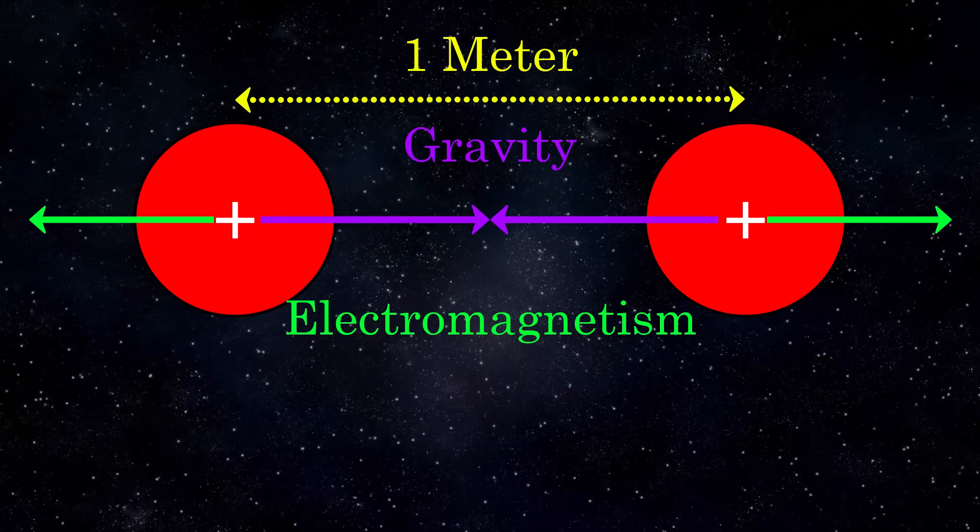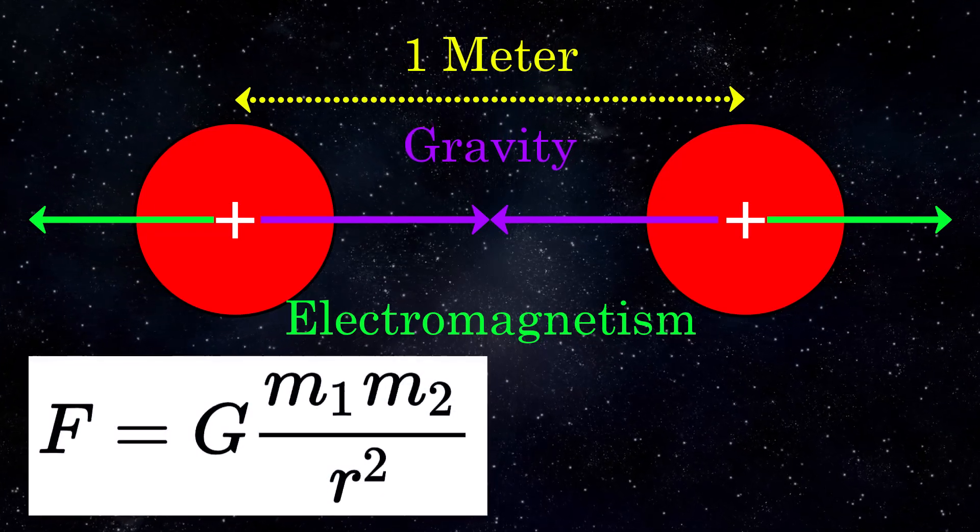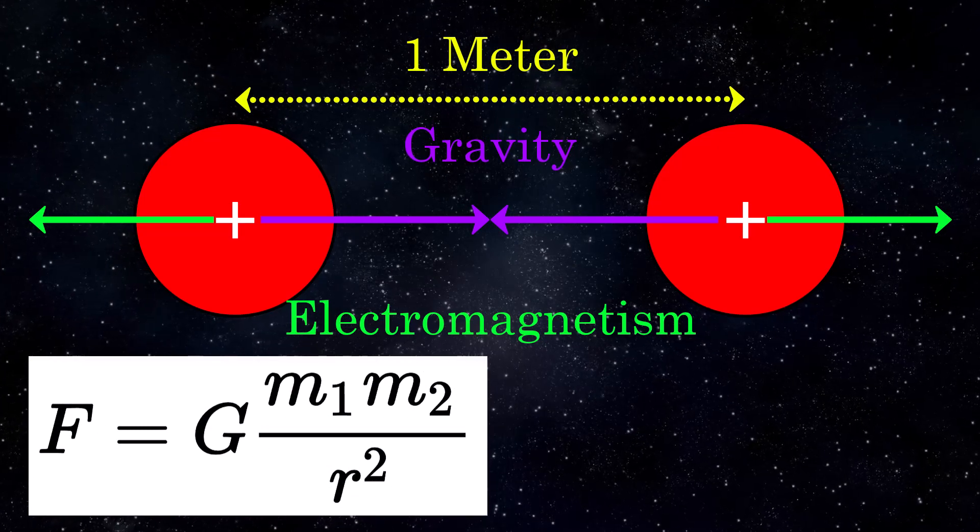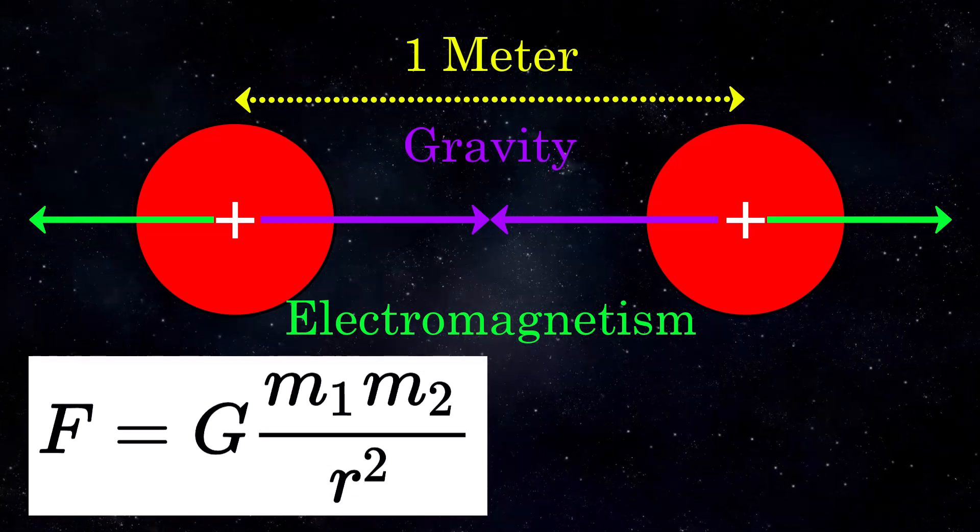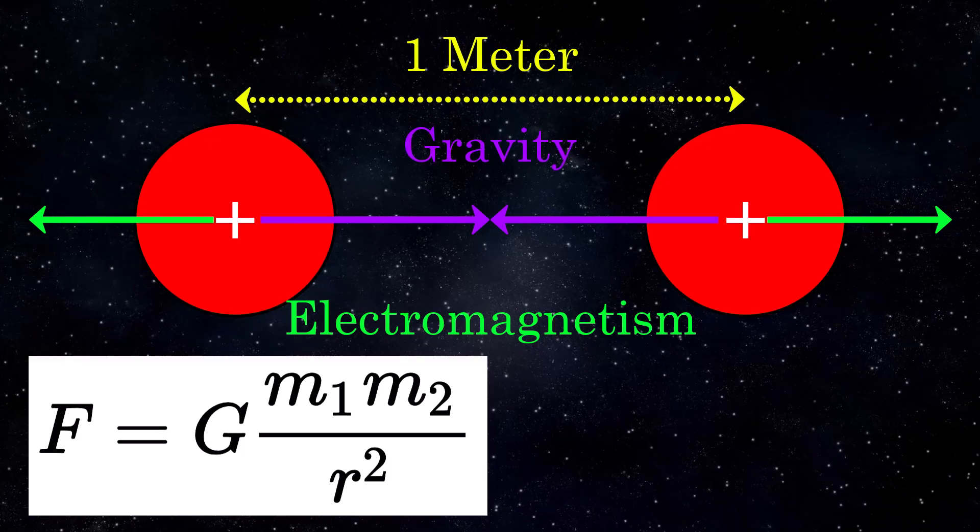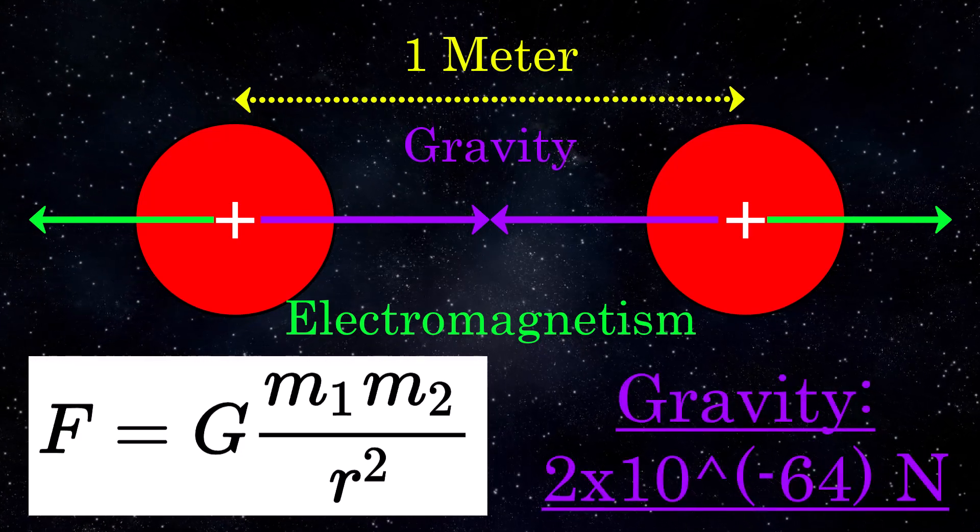Gravitational force here can be easily worked out using Newton's law of gravitation. Where we know the proton mass, the separation r is one meter, and g is the universal gravitational constant. This gives an attractive force of around 2 times 10 to the minus 64 newtons.